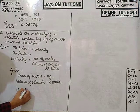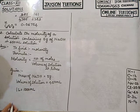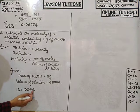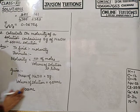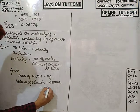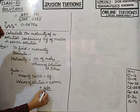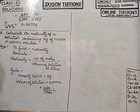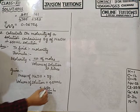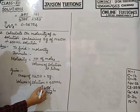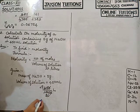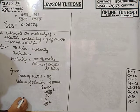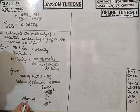Since 1 liter = 1000 milliliters, to convert milliliters to liters I divide by 1000. So 450 ÷ 1000 = 9/20 liters. This is my volume of solution in liters.